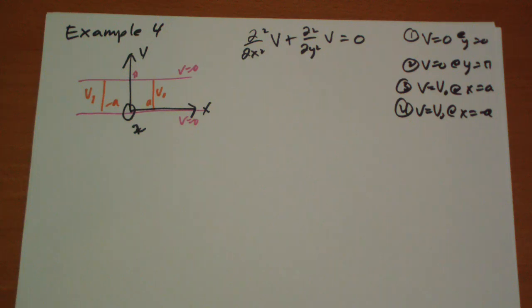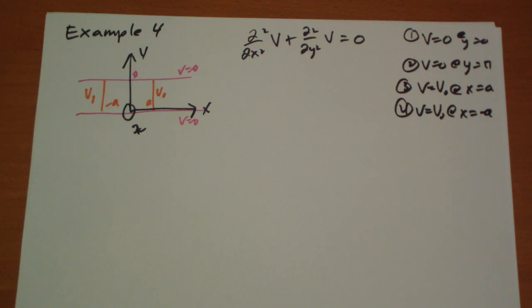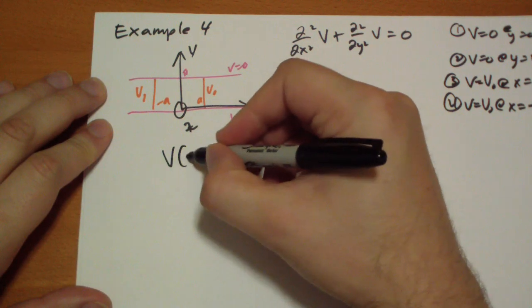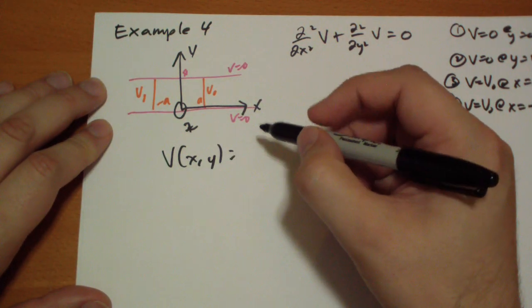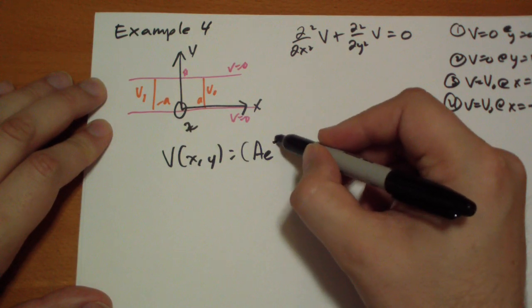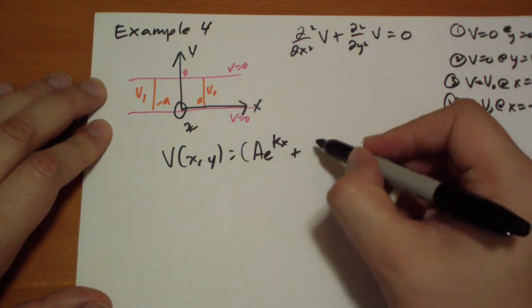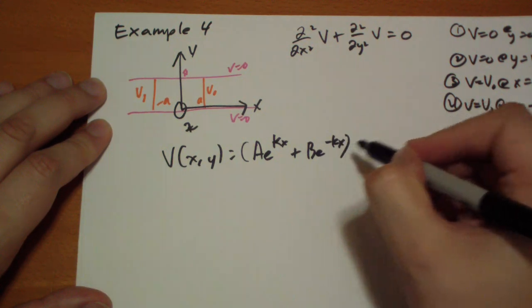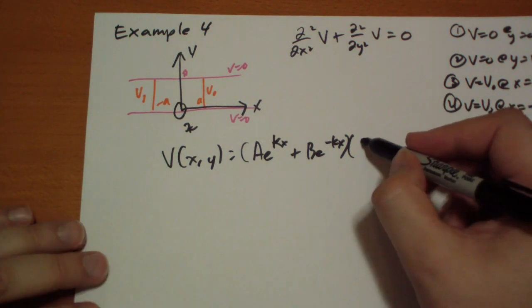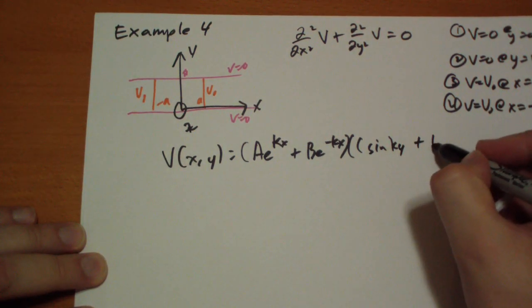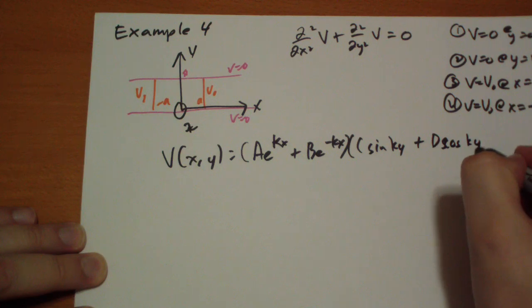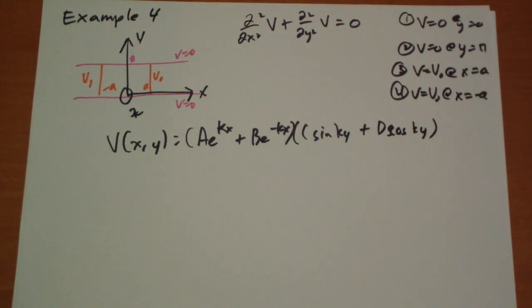So, going through separation of variables like we did before, I'm not going to walk through that whole process. We end up with the function could be, so we're going to take our A e to the kx plus B e to the minus kx times C sine ky plus D cosine of ky. And the ones we can cross off. We can't cross off this one. Because we don't have that requirement anymore, that the potential tends to zero as x tends towards infinity. So we can't cross that off.